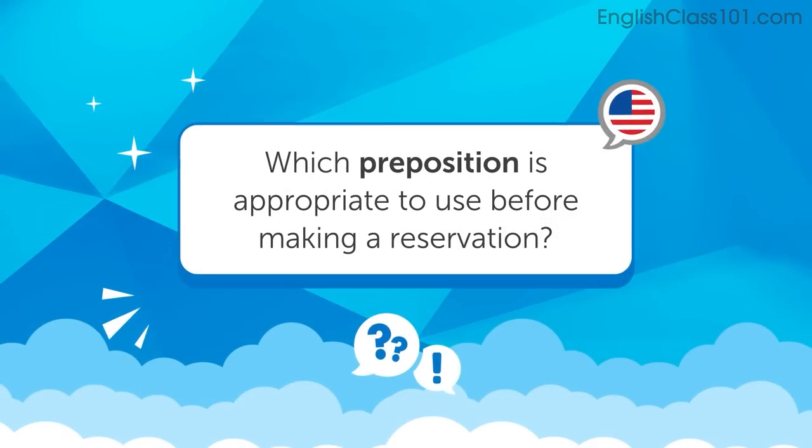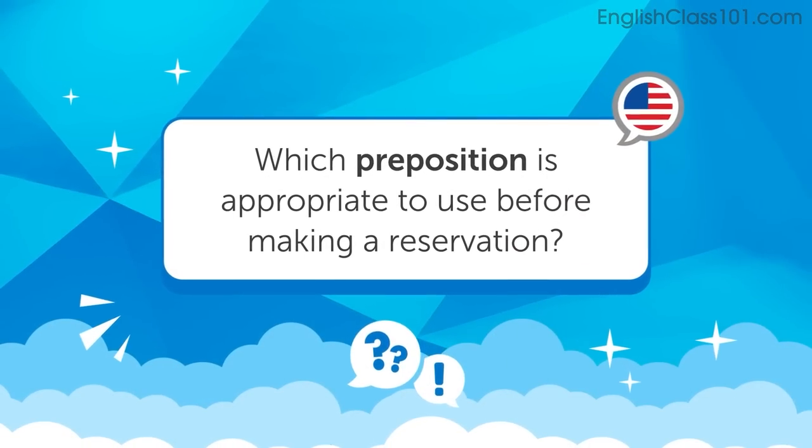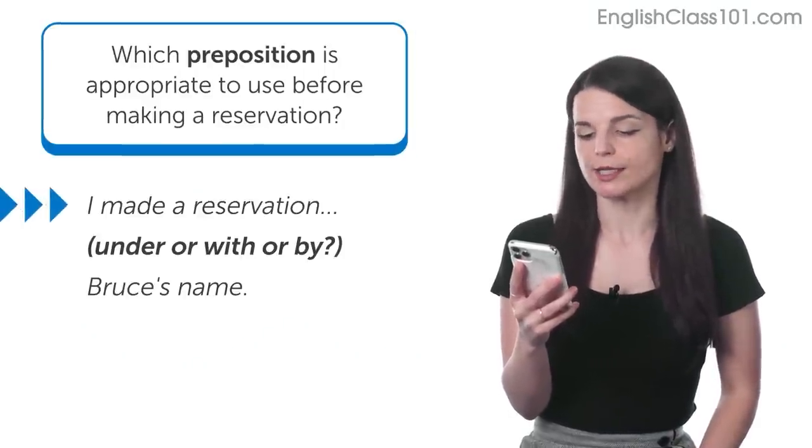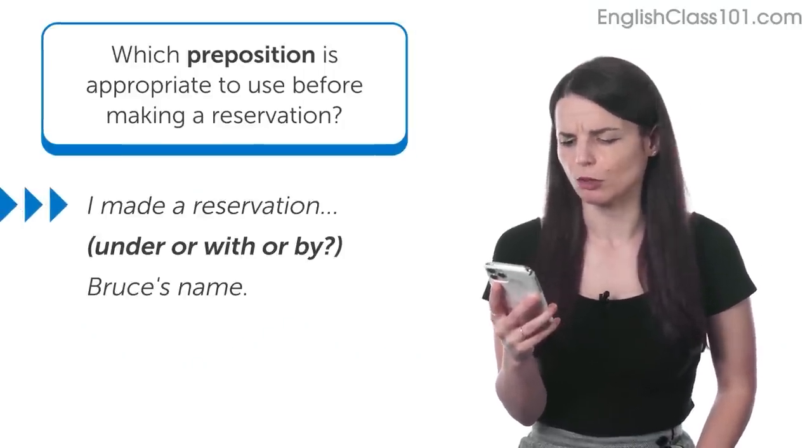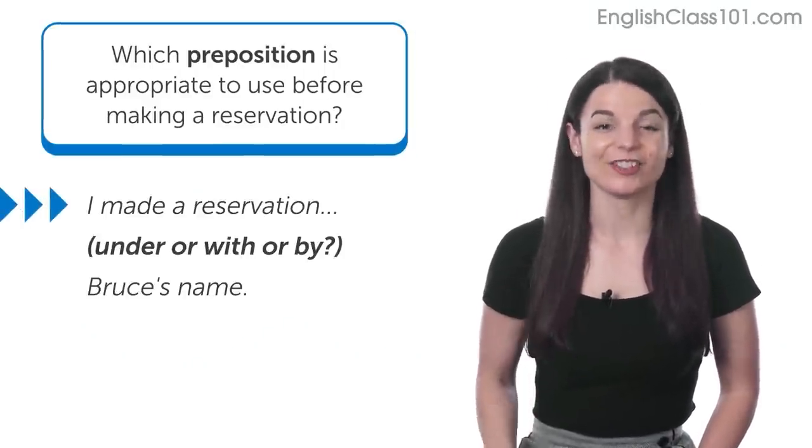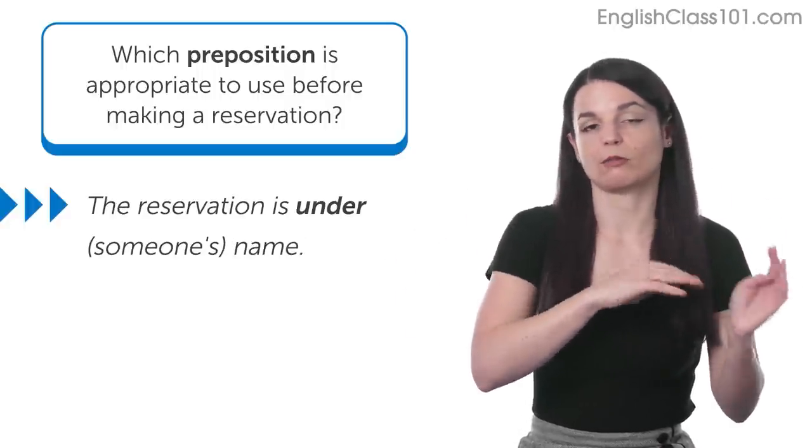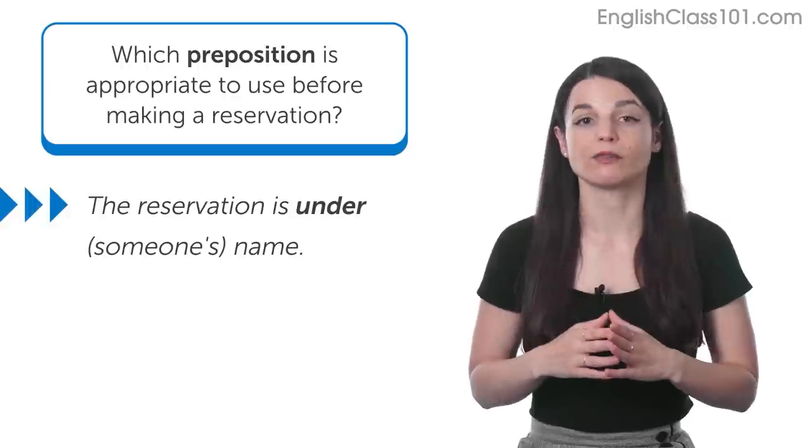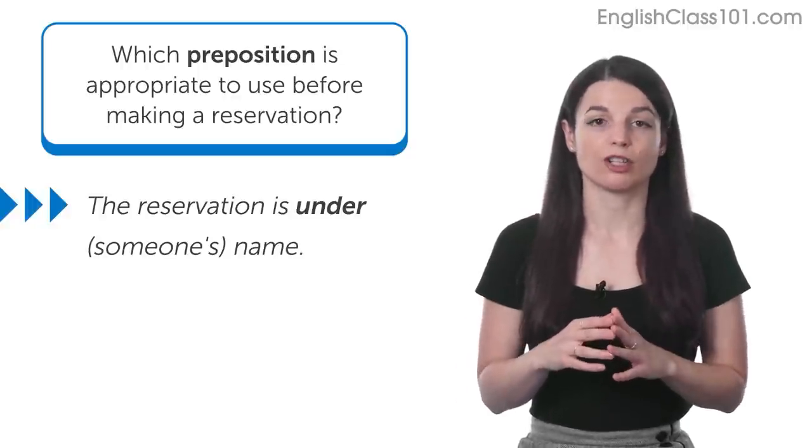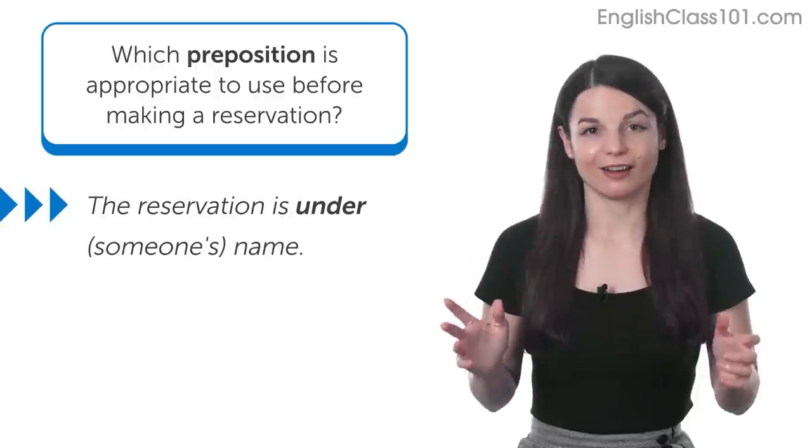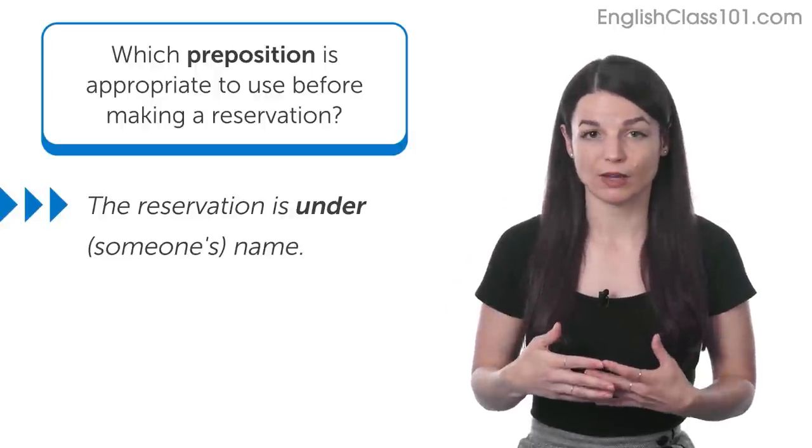Next question comes from Bruce. Hi, Bruce. Bruce says, which preposition is appropriate to use before a reservation? For example, I made a reservation under Bruce's name. Is it under or with or by? Nice question. Yeah, generally we say the reservation is under so-and-so's name. So, the reservation is under my name or the reservation is under his name. The reservation is under my mom's name, whatever. We usually use under to talk about the reservation name.